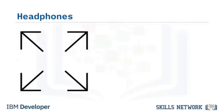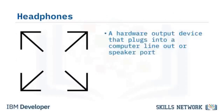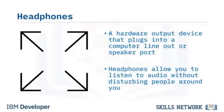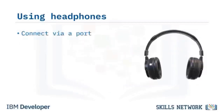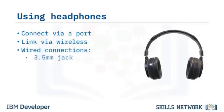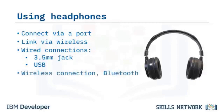Headphones are a hardware output device that plug into a computer's line-out or speaker port, allowing you to listen to audio without disturbing others. To use a headset, connect via a 3.5mm jack — older headsets have two jacks, green for audio out and pink for microphone — or use a USB connection, which offers enhanced experiences with inline amps and controls. Bluetooth headsets remove all cables, allowing more comfortable use.